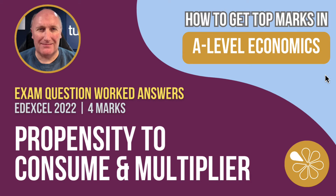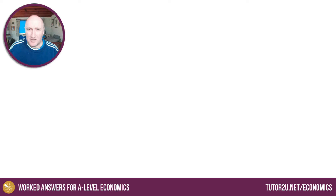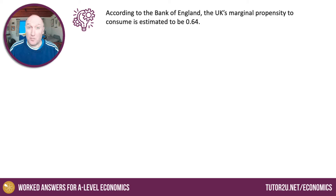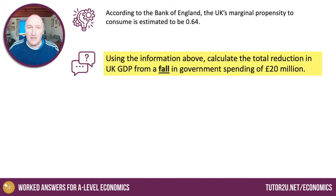Hi there, it's Geoff here with another in our series of worked answers. This is a question on the propensity to consume and the multiplier. Here's the stem: according to the Bank of England, the UK's marginal propensity to consume is estimated to be 0.64. Using the information above, calculate the total fall in GDP in the UK from a fall in government spending of £20 million.